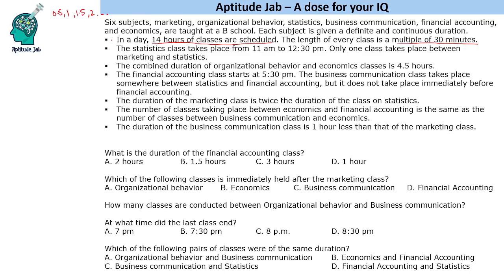We are given that the statistics class takes place from 11 to 12:30 PM — a duration of one and a half hours. Only one class takes place between marketing and statistics. One possibility is one class then marketing, or another possibility is one class then marketing on the other side.